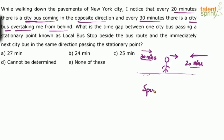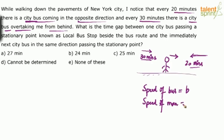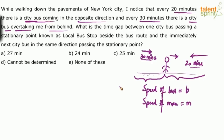Let us assume the speed of the bus is B — whether it is coming in the opposite direction or from behind, the bus speed remains the same. And let the speed of the man be M. This involves the concept of relative speed, since two objects are moving at the same time. When moving in opposite directions, relative speed applies; same when the bus comes from behind in the same direction.